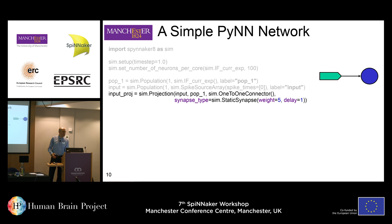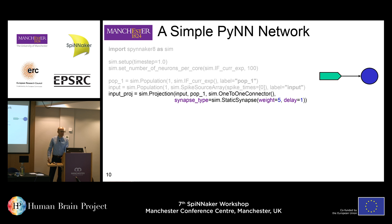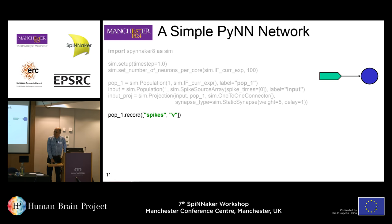The delay defines how long it actually takes for the signal to reach the second population. A delay of one is the fastest — we fire it the first time step and the next time step it arrives. It doesn't mean the next neuron immediately spikes; it may take time depending on your model. In this simple example I'm asking it to record the spikes and the voltage, and then we'll plot those later.